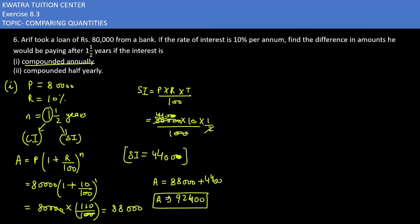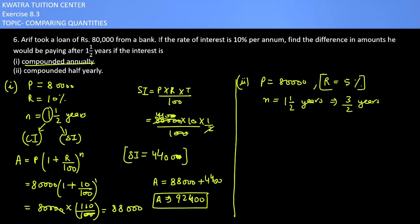Now the second one says compounded half yearly. In half yearly, principle is as it is 80,000, rate is half of it so 5%, time is 1 and a half years which is 3 by 2 years. What you can recall is rate we have halved which is 5%, time we have written 3 by 2, and we will convert to half years. Multiplying by 2 gives 3 half years.